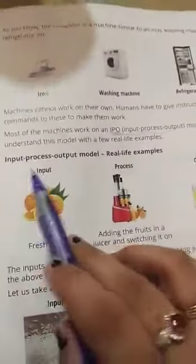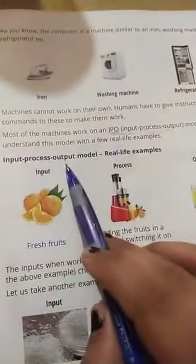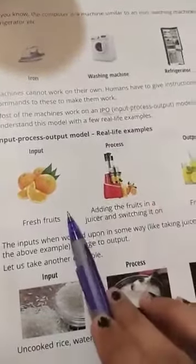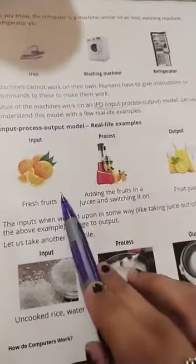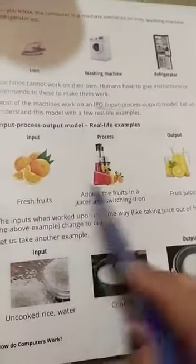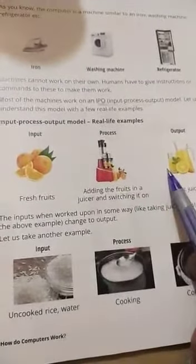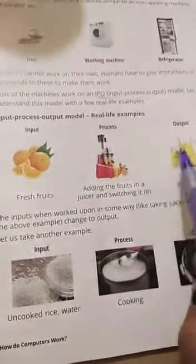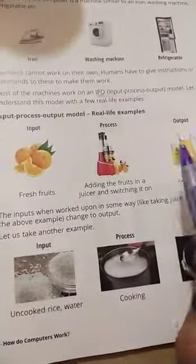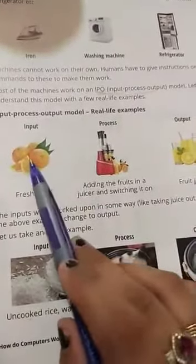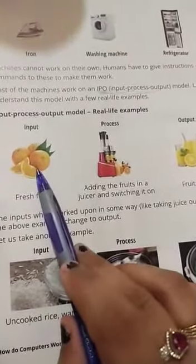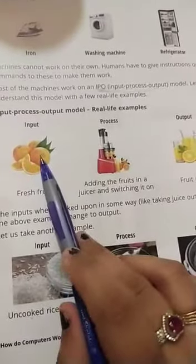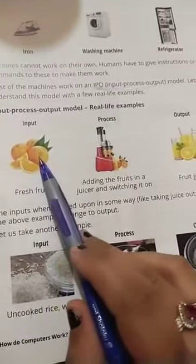Input process output model — real life examples. So ये हमारा पहला example — बच्चो इस example में हमें orange juice निकालना है। So orange juice निकालने के लिए हमें जो जो सामान चाहिए वह हमारा input है, for example orange।